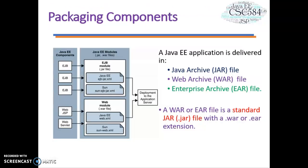Now let's take a look at packaging components. After we develop all our web component applications, we need to get started with local deployment. When you deploy your application, you typically package it into a file that is very similar to a zip file. For example, for a Java EE application, you package it into a Java Archive or JAR file. If your project is a web archive, you package it into a WAR file. And for an enterprise application, an EAR file. You can then use this file to deploy to a local server or a cloud server.